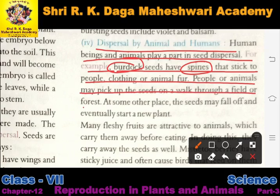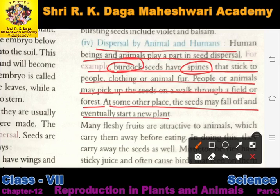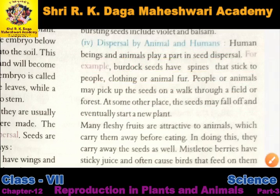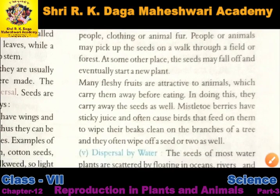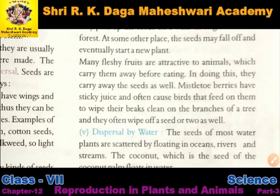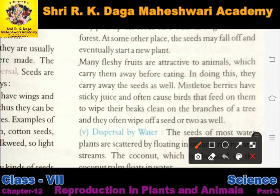People and animals pick up seeds on a walk through a field and a forest — agar hum kisi forest mein ghoom rahe hain to ye spines hamare kapdon ke saath lag jayenge. At some other place the seeds may fall off and eventually start a new plant — jab ye seed kisi dusri jagah par gir jate hain, to wahan soil ke andar bury ho jate hain aur ek naye plant mein convert ho jate hain.